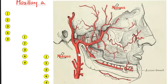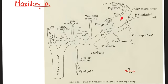This is the external carotid artery. This is the maxillary artery, and this is the superficial temporal artery — the two terminal branches of the external carotid. The maxillary artery has three parts, which we'll discuss in detail in the video titled 'Maxillary Artery.'